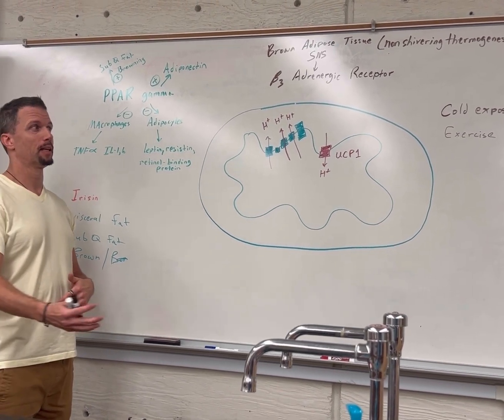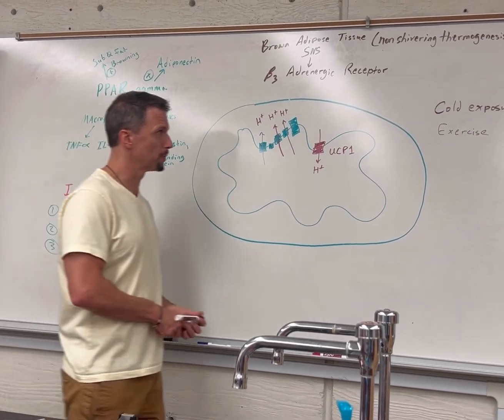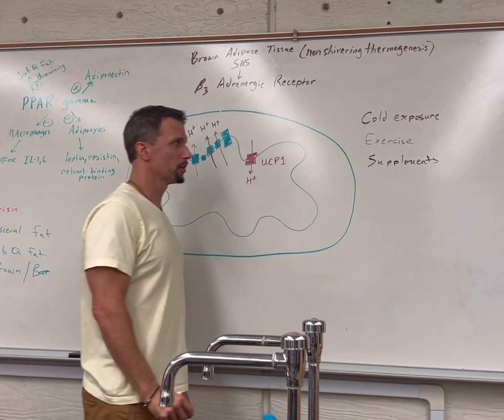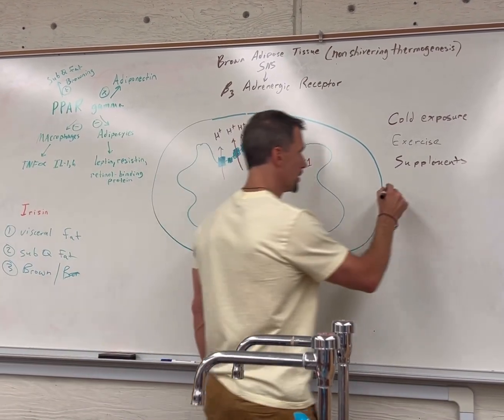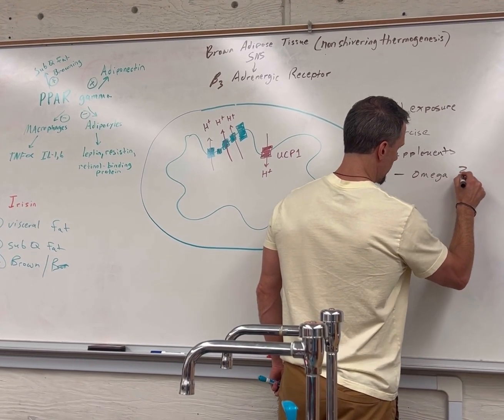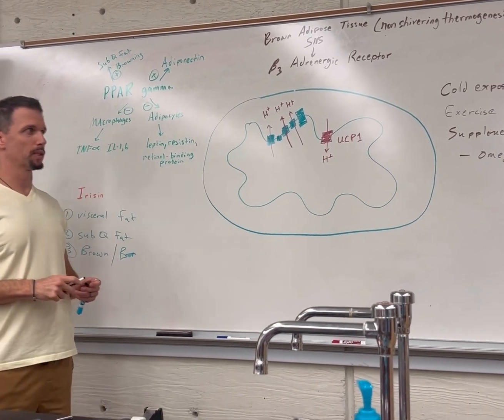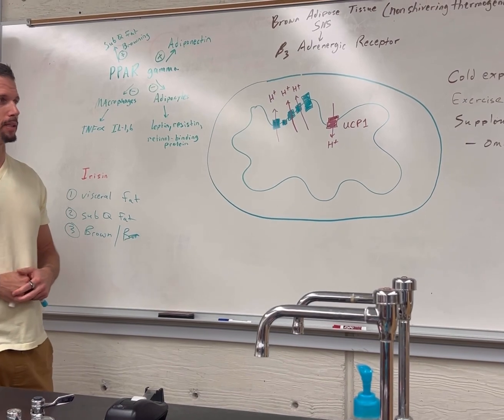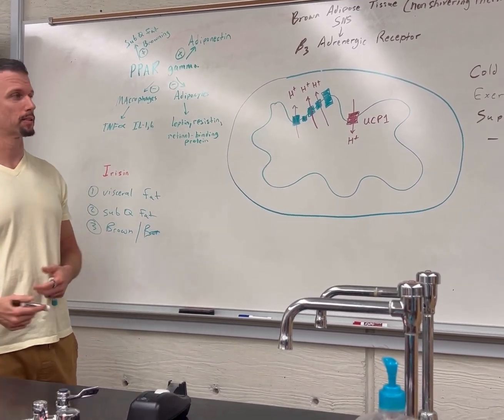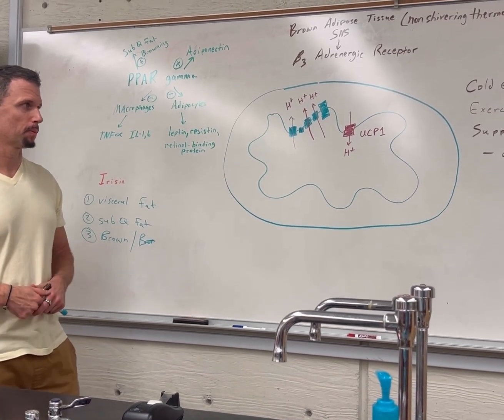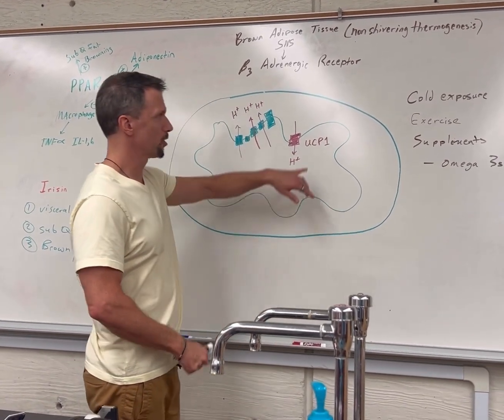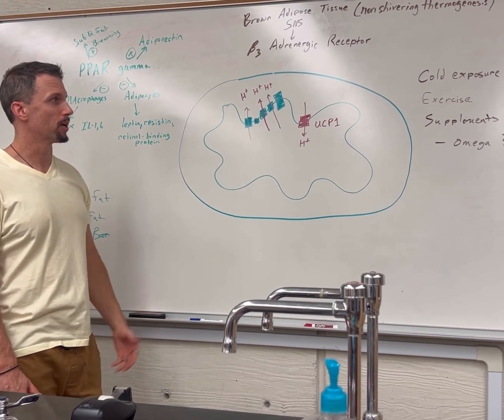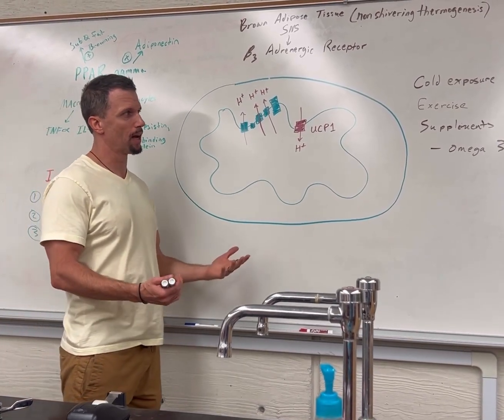There's some supplements that keep coming up. One is omega-3s. It's really hard to get enough omega-3s in your diet, so I strongly recommend supplementing. I eat salmon two or three times a week plus mahi-mahi and halibut, and I'm still low on omega-3s measured in red blood cells. Omega-3s increase gene expression of uncoupling protein 1, so you get more placed in the inner mitochondrial membrane. They also cause browning of white fat.